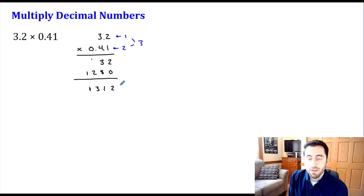So then to find out my final answer, I'm going to start at the very right of my answer down here. And because I have three decimal numbers, I need to count one, two, three numbers to the left, and then that is where my decimal is going to go. So we have 1.312 as our final answer.